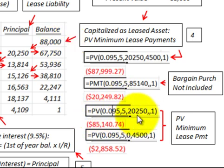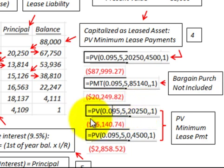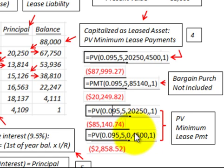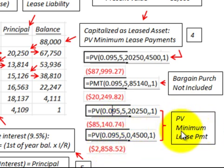Using the calculator rather than discount factors: the present value of the $20,250 minimum lease payments discounted back is $85,140. Plus the bargain purchase option of $4,500 discounted back five years at 9.5% is worth $2,858. Adding those two together gives the present value of the minimum lease of approximately $88,000.